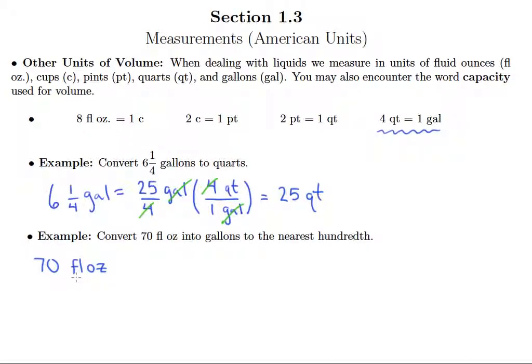And also it's important to write fluid ounces because as we'll see in our next video, there's such thing as ounces that measure weight and they're two different things. So fluid ounces are different than ounces. So make sure if you're talking about volume, make sure it's fluid ounces. So 70 fluid ounces. If it helps, we can put it over 1.